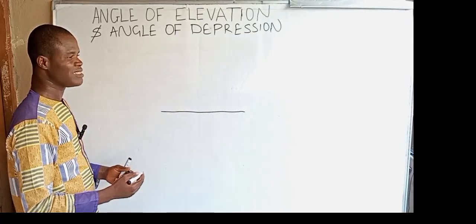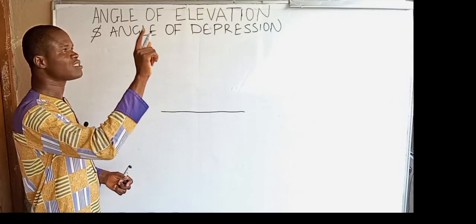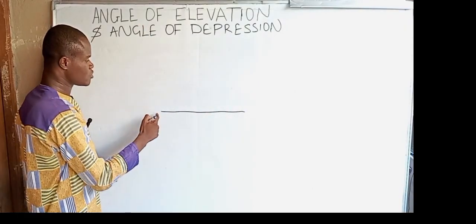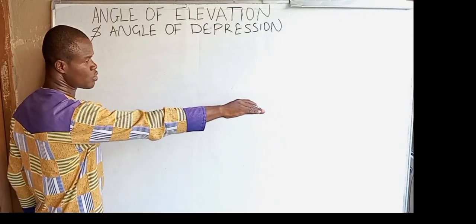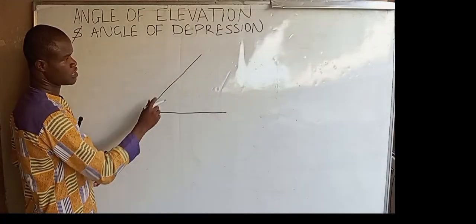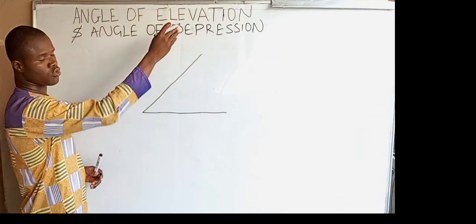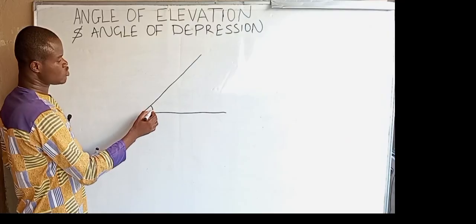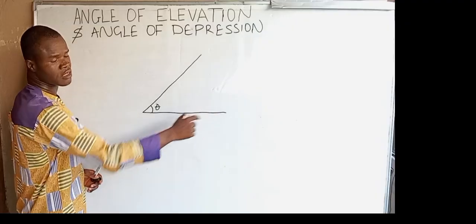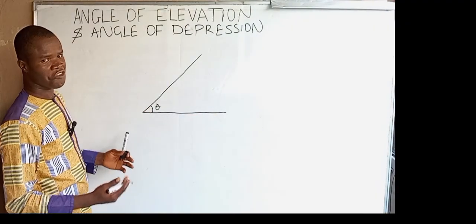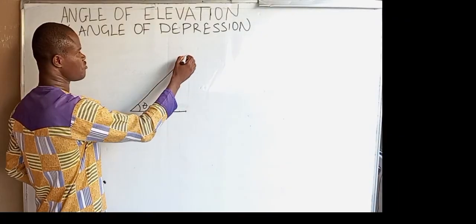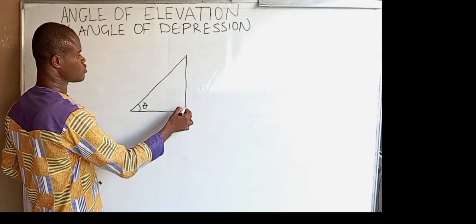The angle of elevation is the angle our upward sight makes with the normal. That is to say, this is your normal looking direction, and then you decide to look up this way. This is your upward look. Then your upward look has made an angle theta with the normal, so this angle is what we refer to as angle of elevation.